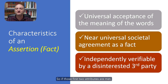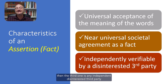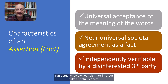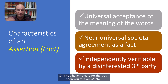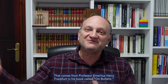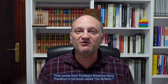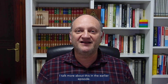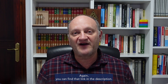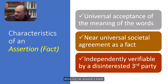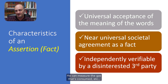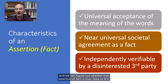So if those first two attributes are met, then the third one is that any independent disinterested third party can actually review your claim to find out if it's truthful and sincere. If you're lying, then you're a jerk. Or if you have no care for the truth, then you're a bullsh**. That comes from Professor Emeritus Harry Frankfurt in his book called On Bullsh**. In the case of the miles per gallon, I can ask my neighbor to go out, drive my car around a track, measure the gas that's consumed, and figure out whether that assertion of fact is true, false, or BS.